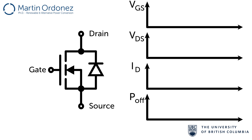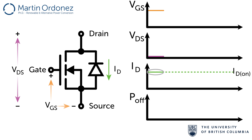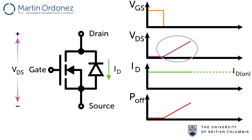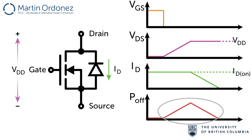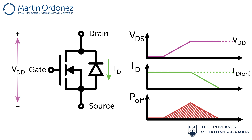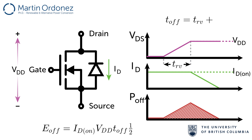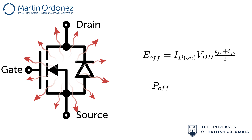Turn-off losses are similar to turn-on losses. When the MOSFET is on, VDS is very small, close to zero, and there is current flowing through the drain. When the device is turned off, the voltage VDS starts to rise, but the current ID is still flowing through the device. When the voltage between drain and source reaches its final value VDD, the current starts to drop until it reaches zero. The energy dissipated during turn-off is ID_on times VDD times the total transition time divided by 2, where the total time is the voltage rise time plus the current fall time. Turn-off losses are then determined by multiplying this energy by the switching frequency.